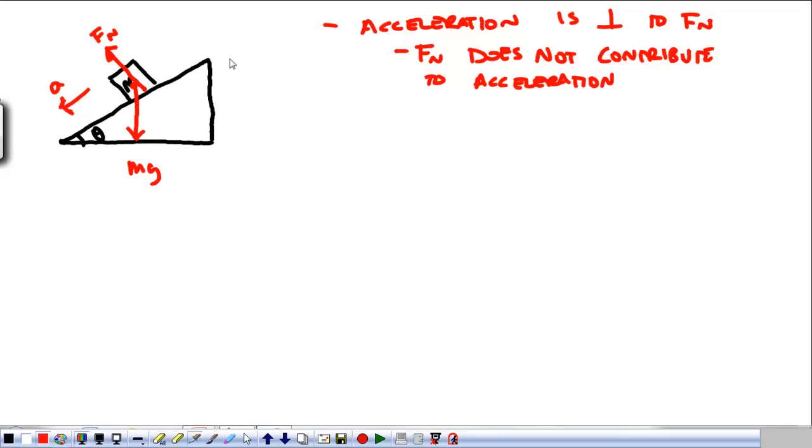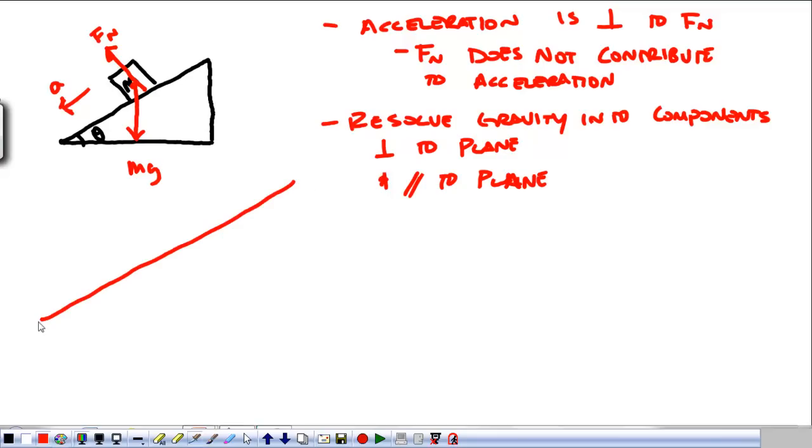So, we're actually going to leave the normal force alone, and what we're going to have to do is resolve gravity into components perpendicular to the plane and parallel to the plane. Now, this is something we did last year, taking and figuring out how things work on an inclined plane. But to do that, I'm going to draw a little bit bigger of an inclined plane so that we can see how these angles work. That's really the important part.